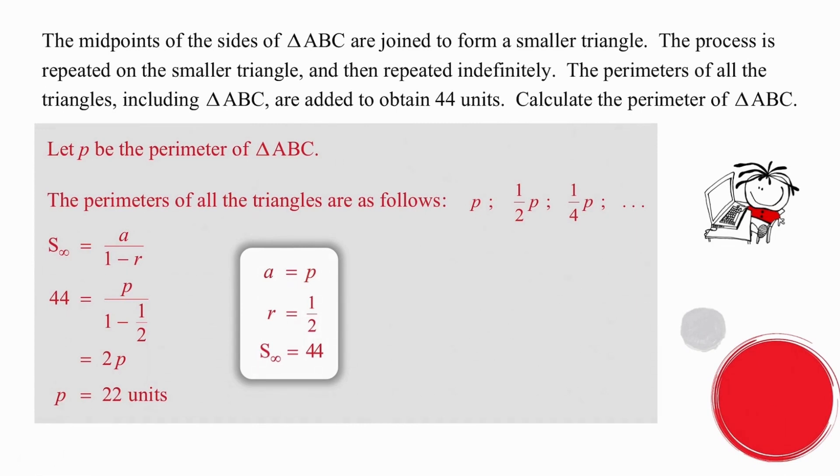In order to explain what we are going to do, we are going to let p be the perimeter of triangle ABC. This means that our perimeters will be p and then a half p, which we figured out using the midpoint theorem, and then that perimeter will half again and give us a quarter p. So we can use the sum to infinity formula because our r value is a half and that lies between minus 1 and 1. Our a value will be p and our sum to infinity is given as 44. Substituting the relevant values into the formula and solving that formula, we get p equal to 22 units. So the perimeter of triangle ABC is 22 units.